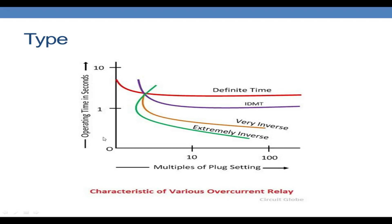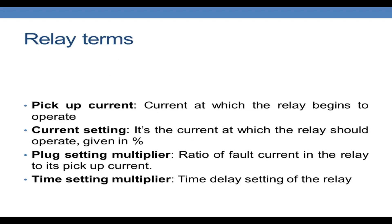There are many curves inside the IDMT itself, such as normally inverse, short inverse, very inverse, extremely inverse and so on. Moving on to relay terminologies: the first is pickup current, which is simply the current at which the relay begins to operate. Taking the analogy of electromechanical relays, there are two opposing torques — the deflecting torque and the controlling torque. The pickup current is the amount of current which causes the deflecting torque to just rise above the controlling torque. The current setting is the current at which the relay should operate, given in percentages. By adjusting the number of turns we can set the pickup current.